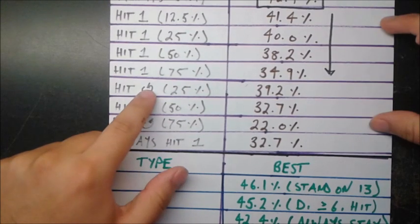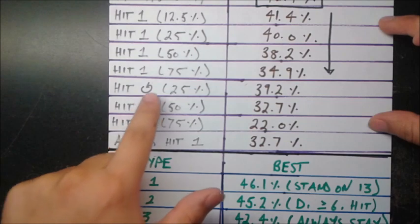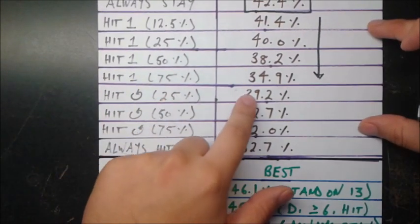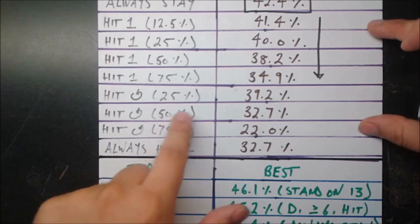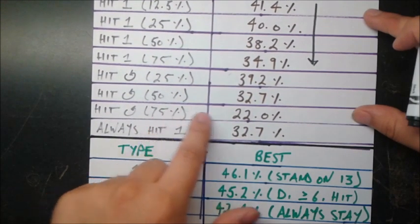So we see that these are actually lower than their counterparts. For example, hit one, 25% is 40. Hit one, 25%, hit continuous, 25% is less than that. Hit 50% is 32.7, whereas here it's 38.2. And hit 75 is just abysmal. It's 22%. This is, I mean, definitely it's a terrible strategy.